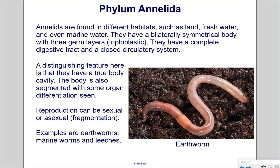Phylum Annelida. Annelids are found in different habitats such as land, freshwater, and marine water. They have a bilaterally symmetrical body with three germ layers, so they are triploblastic. They have a complete digestive tract and a closed circulatory system. A distinguishing feature is that they have a true body cavity. The body is also segmented with some organ differentiation. Reproduction can be sexual or asexual; asexual reproduction occurs by fragmentation. Examples are earthworms, marine worms, and leeches.